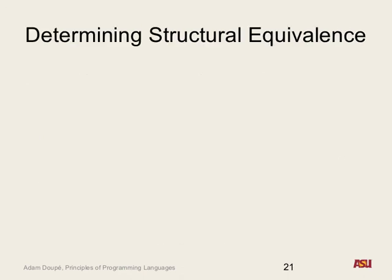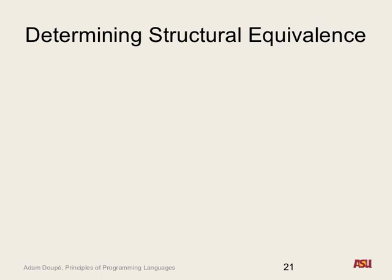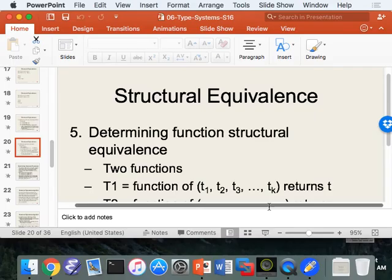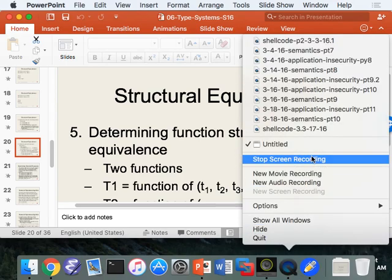When we come back next week, we'll do how to determine structural equivalence — because it's actually not as straightforward as we just saw, since we can have recursive types that refer to other types that refer back to themselves. So how do we determine structural equivalence in those cases, and we're going to use a link list to help us.